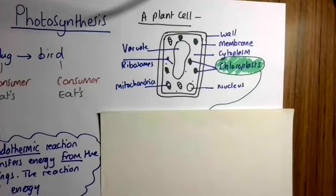has a cell membrane, cytoplasm, chloroplasts, and we'll come back to those, nucleus, vacuole, ribosomes and mitochondria. Now, we in photosynthesis are interested in the chloroplasts.